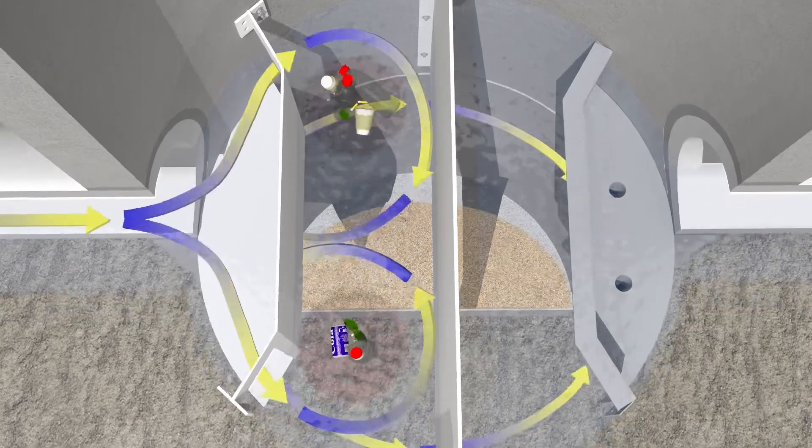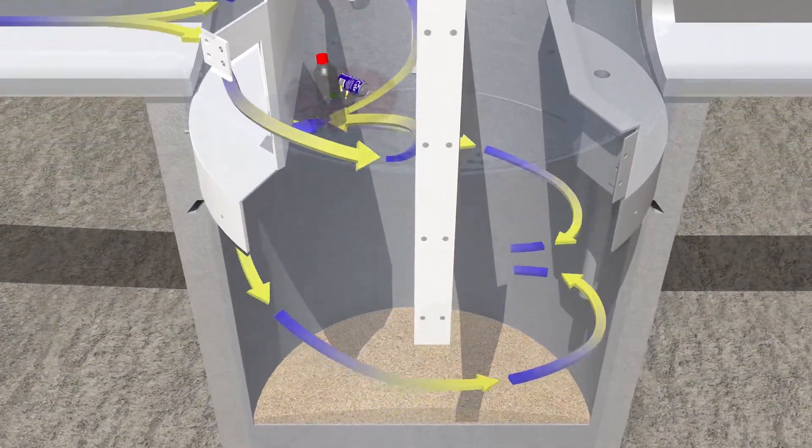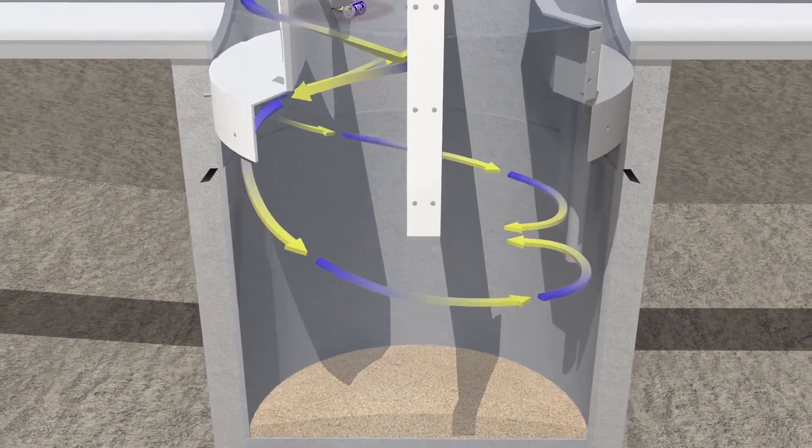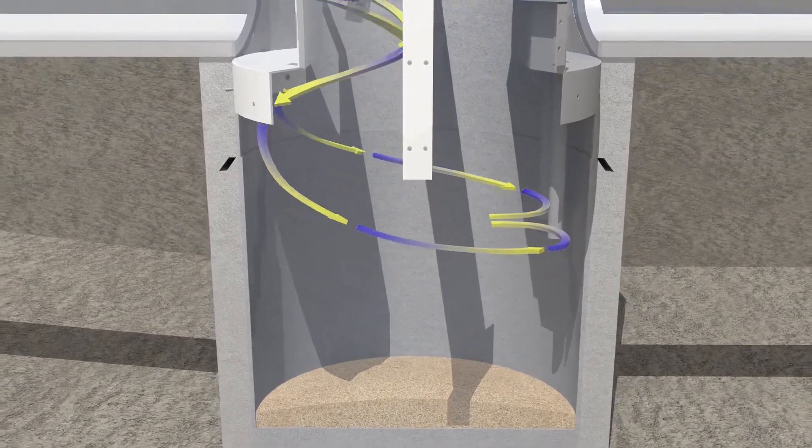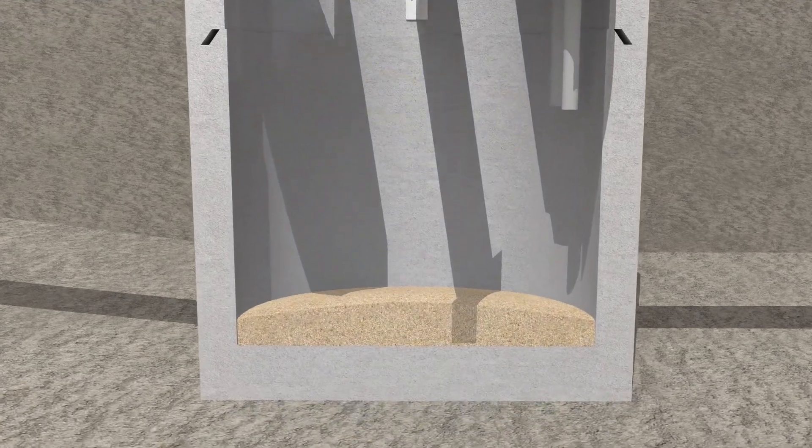This feature not only creates an area for concentration of floatables and hydrocarbons, but also optimizes the flow path and directs fine sediment to settle back out below the inlet and down to the bottom of the sump chamber, maximizing sediment collection.